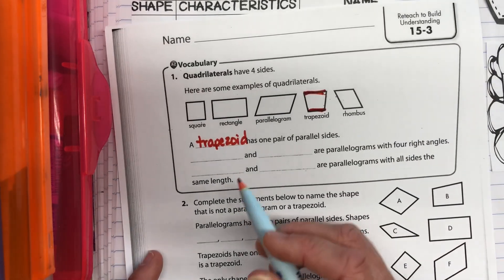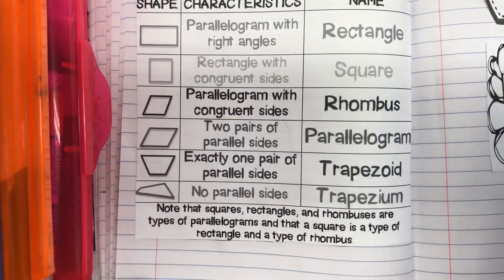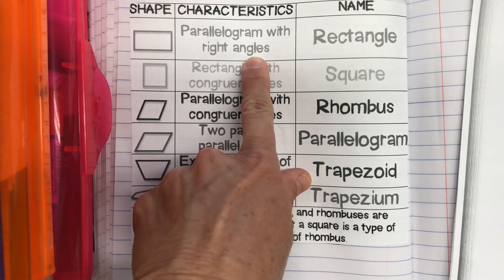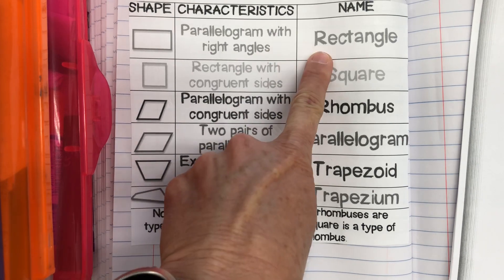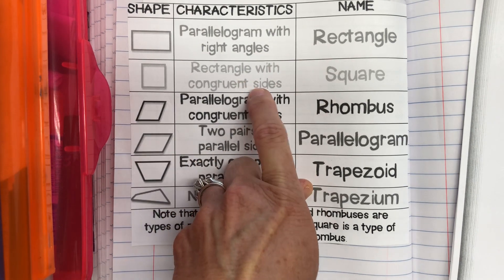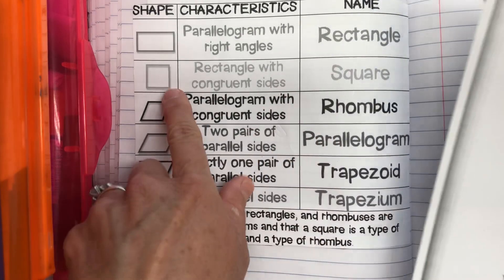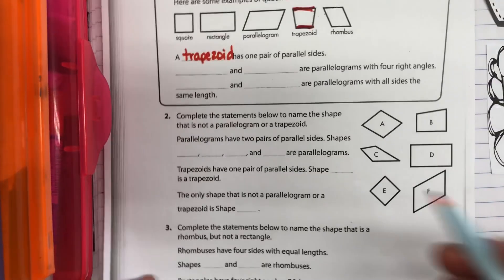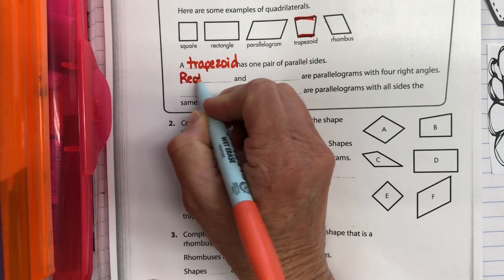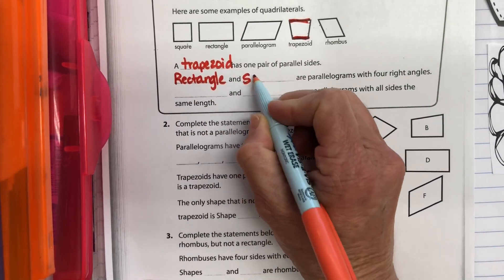That's why it only has one pair of parallel lines. Blank and blank are parallelograms with four right angles. A parallelogram with right angles is a rectangle, and a rectangle with equal sides is a square. So both a rectangle and a square are parallelograms with four right angles.